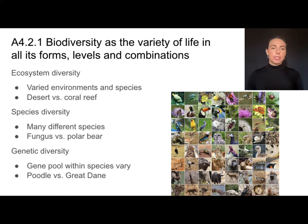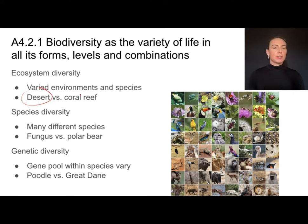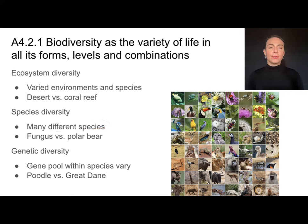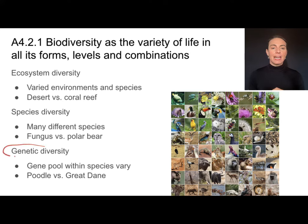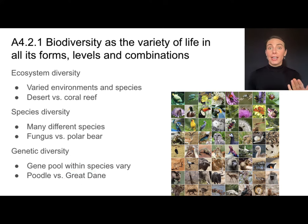We can have ecosystem diversity — different environments and different types of organisms living in them, like a desert versus a coral reef. We can have species diversity, looking at the many different species present in an ecosystem. Or even within a species, we can have genetic diversity — a poodle is very different from a Great Dane, but they're both the same species.